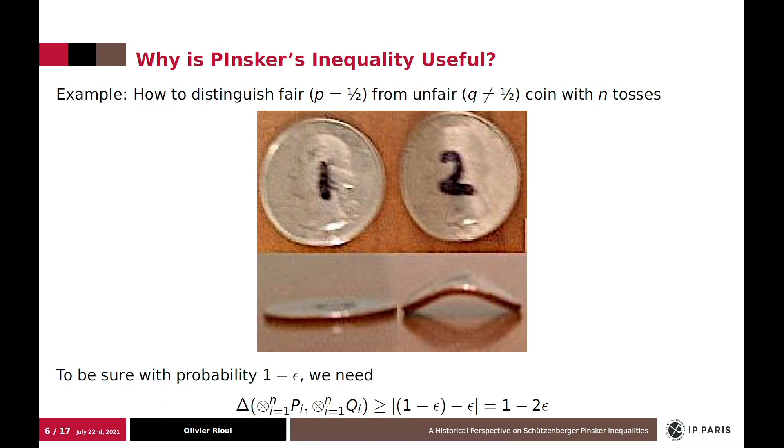Why is Pinsker inequality useful? Suppose, for example, that I have two coins. One is fair and one is bent, like an unfair coin. And I would like to make the distinction between those two by doing n tosses. You are not allowed, of course, to look at the coins. But you are only allowed to look at the results of the n tosses.